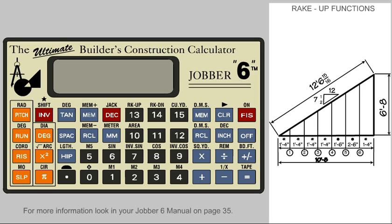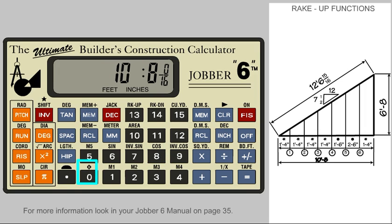First, let's consider a raked wall that is sloping up at 7½ inches to 12 pitch and a base run of 10 feet 8 inches. With the calculator on, we first enter the pitch: 7½ inches. Press the Pitch key to tell the calculator this is the pitch. Now enter the run or base: 10 feet, 8 inches, and 0 sixteenths. That's all the triangle dimensions we need to do our calculations.